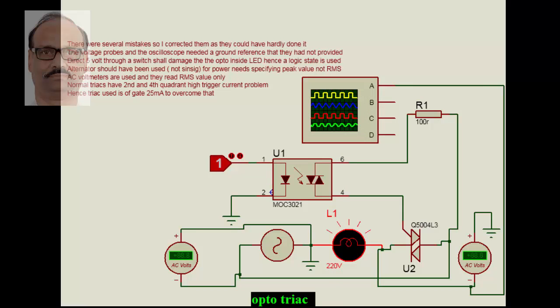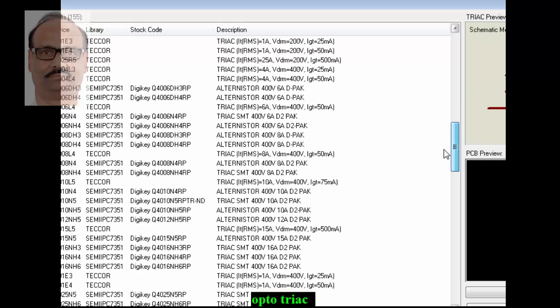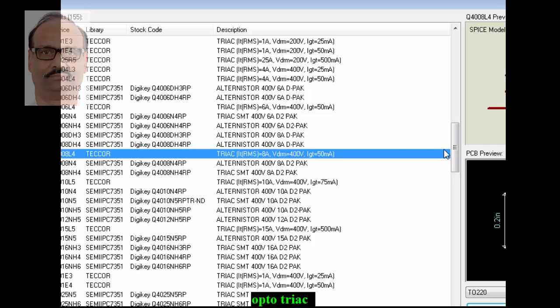Then the oscilloscope is having a ground reference, we can see. Of course, the rest of all things, the most important is the TRIAC. The TRIAC what you have seen here: we have taken a TRIAC Q5043. If you look at this 43, which we had seen, is about 25 milliampere gate current.